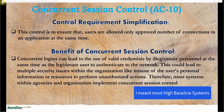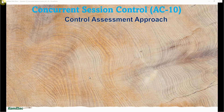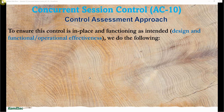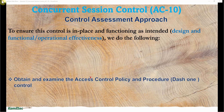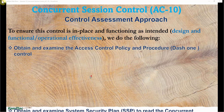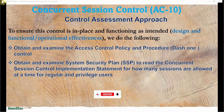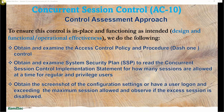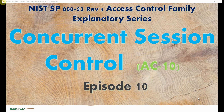Therefore, most systems within agencies and organizations implement concurrent session control to check behaviors like taking over authentication credentials that don't belong to you. For the control assessment approach — to ensure this control is in place and functioning as intended — you do the following: first, obtain and examine the access control policy and procedure (the -01 control); second, obtain and examine the System Security Plan (SSP) to read the concurrent session control implementation statement for how many sessions are allowed for regular and privileged users (admins); and third, obtain a screenshot of the configuration settings, or have a user log on exceeding the maximum sessions allowed and observe whether the additional session is disallowed.